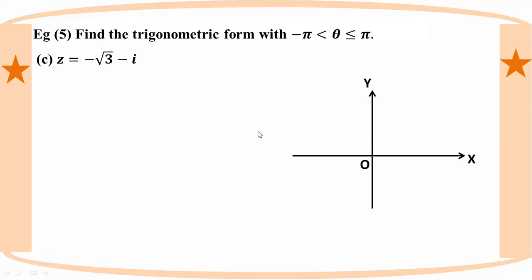Number 3: z equal to minus root 3 minus i. The coordinate point is x = minus root 3, y = minus 1.